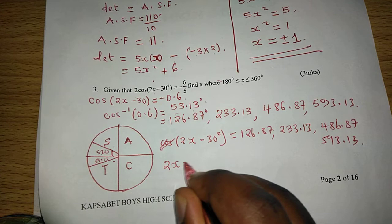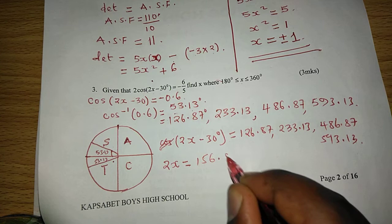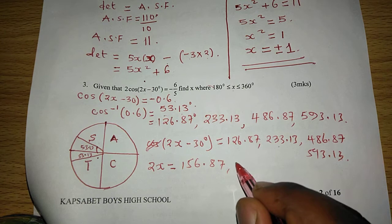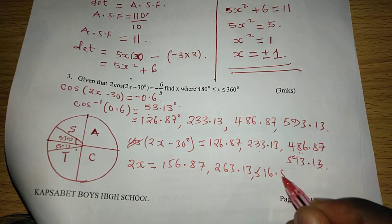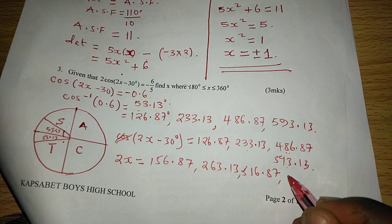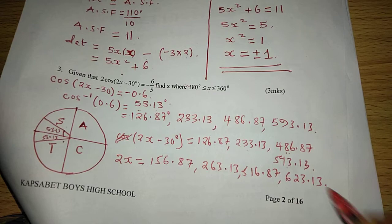So now we can remain with the 2x equals to, we add 30 in each, whereby we will get 156.87, because negative 30 taken to the other side becomes a positive. When we add that here, we get 263.13. The other one, when we add that here, we get 516.87. And when we add that to the other one, we will get 623.13.